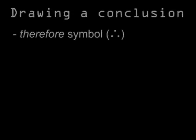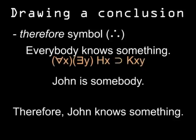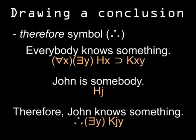When you're drawing a conclusion in language, you often use the word 'therefore.' This indicates that whatever follows is implied by whatever came before. You can show this in logic with a triple dot before your conclusion. For example: 'everybody knows something' translates to 'for all x, for some y, if x is human, then x knows y.' 'John's somebody' becomes 'John is human.' Therefore: 'for some y, John knows y.'